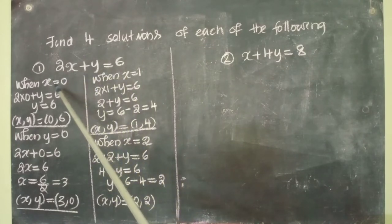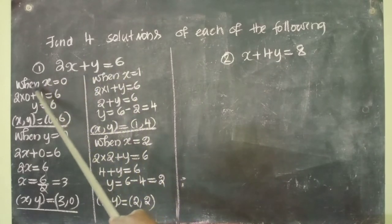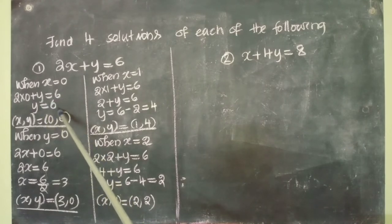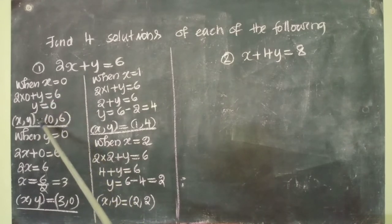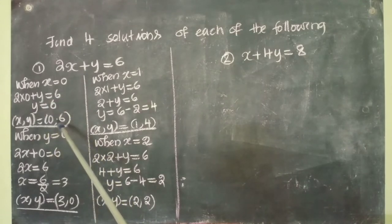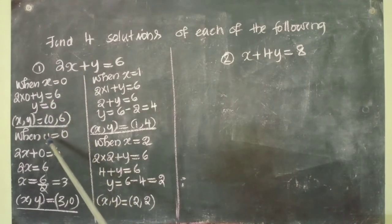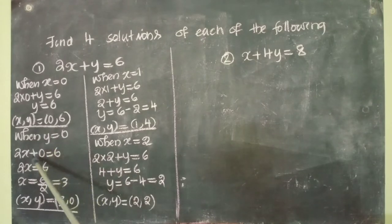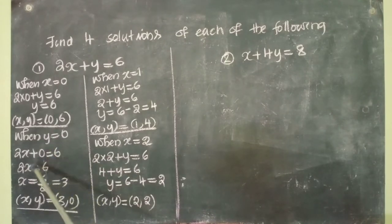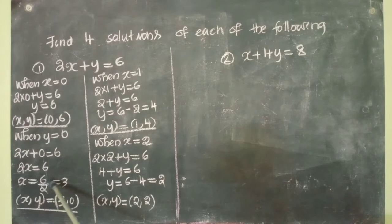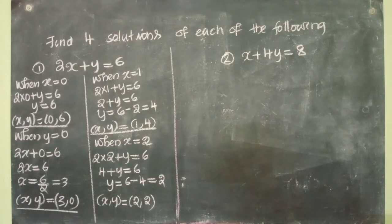When x equal to 0: 2 into 0 plus y equal to 6, that is y equal to 6. Therefore (x, y) equal to (0, 6). Then when y equal to 0: 2x plus 0 equal to 6, 2x equal to 6, x equal to 6 by 2, that is equal to 3. Therefore (x, y) equal to (3, 0).